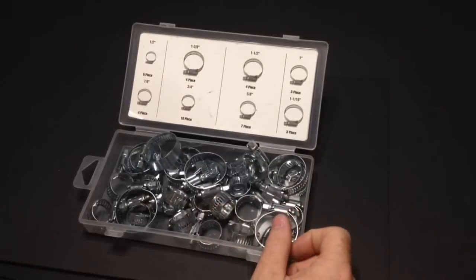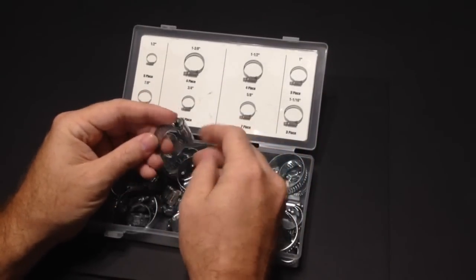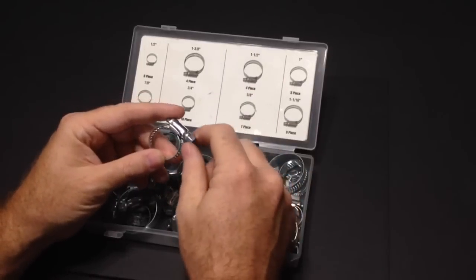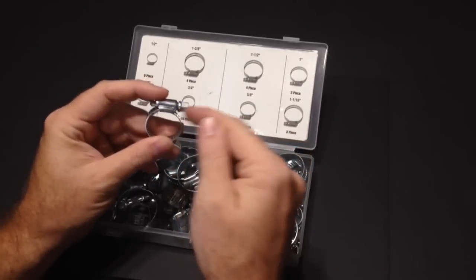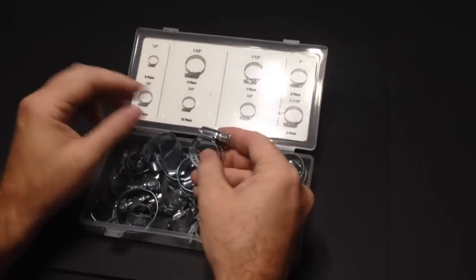Here lately I've been able to tell them go to Harbor Freight, buy a box of these things. What I do is I don't use them right out of the box. I'll use a little bit of PB Blaster or WD-40 before I even try to undo it or tighten it up, and that actually frees it up.